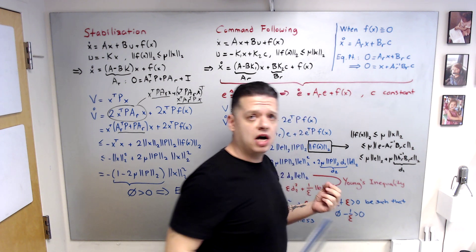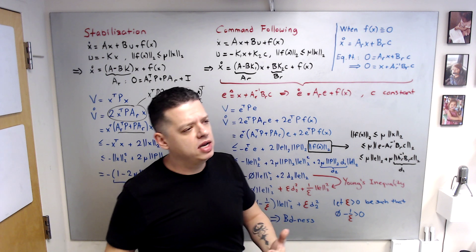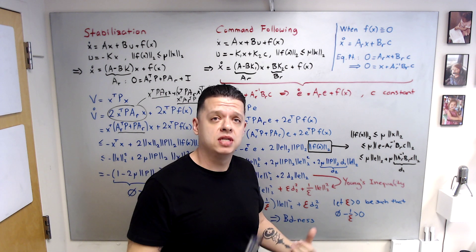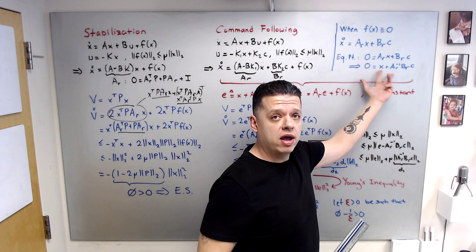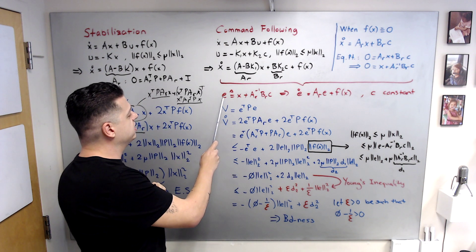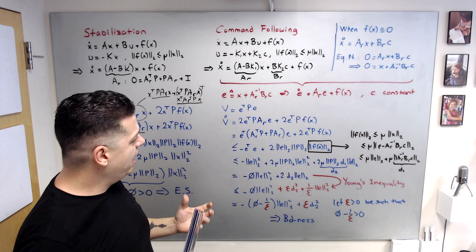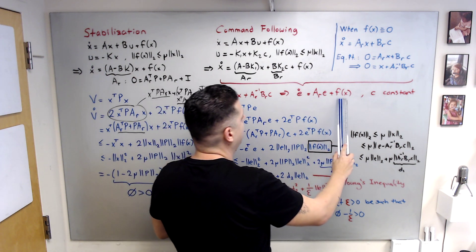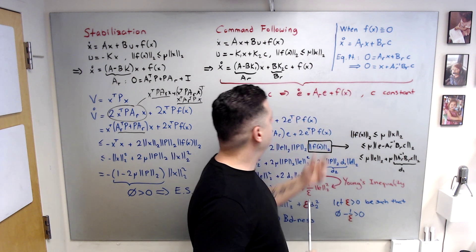The equilibrium point captures the ideal situation: some states follow the command and overall closed-loop performance and stability are achieved. The question is whether we can achieve the same equilibrium point in the presence of uncertainty. Motivated by this, I define the error signal e = x + (equilibrium shift), so e-dot = A_R e + f(x). When f is removed, e-dot = A_R e and the error goes to zero.